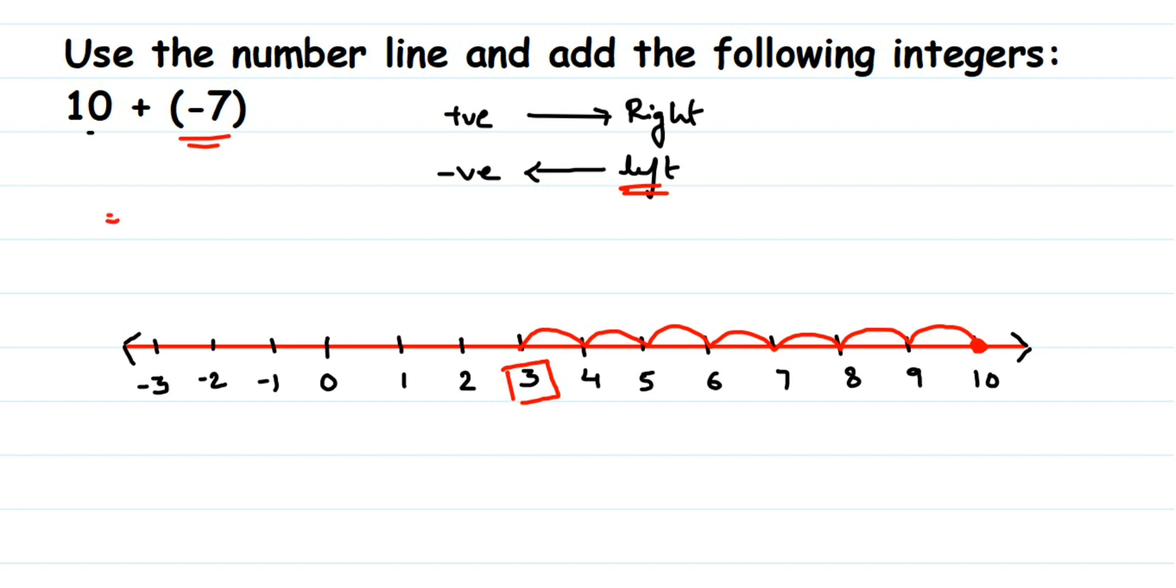If you calculate 10 plus minus 7 without a number line, the answer will also be 3. I hope this question is clear. In case you have any other question or doubt, you can drop a comment. Thank you so much for watching.